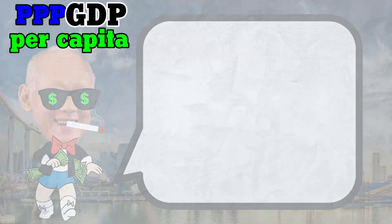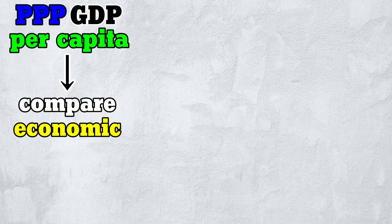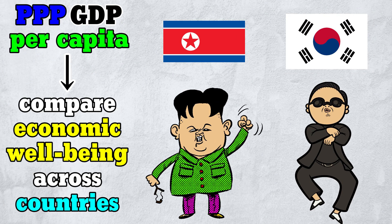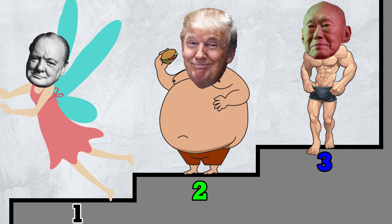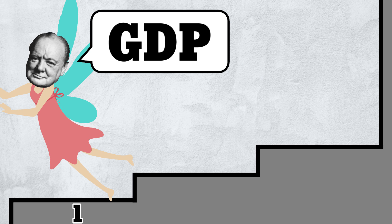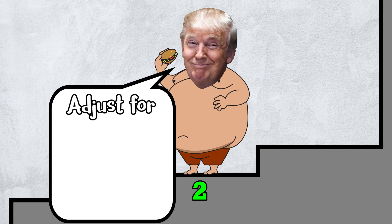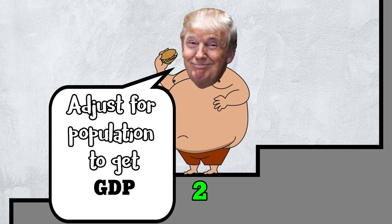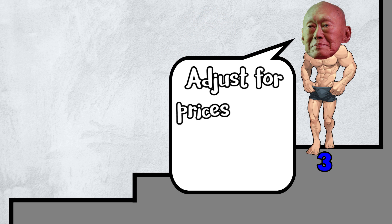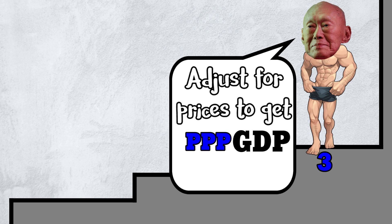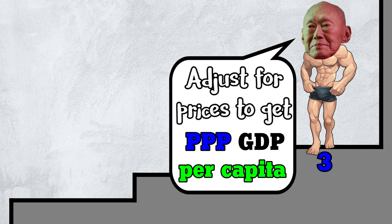PPP GDP per capita is a measure for comparing economic well-being across countries. It is constructed in three steps. Step 1: Calculate GDP. Step 2: Adjust for population to get GDP per capita. Step 3: Adjust for prices to get PPP GDP per capita. Let's go through these steps slowly.